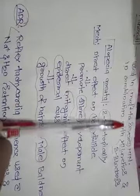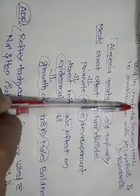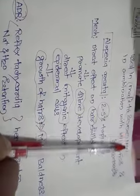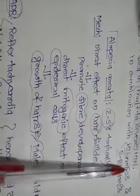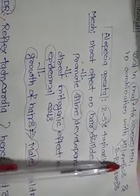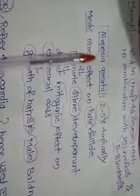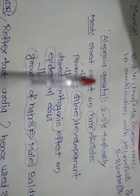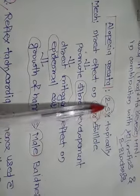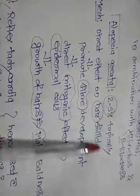Minoxidil is used in moderate to severe hypertension in combination with diuretics and beta blockers. Most importantly, Minoxidil is used in the treatment of alopecia areata or male-type baldness, as a 2–5% topical solution.